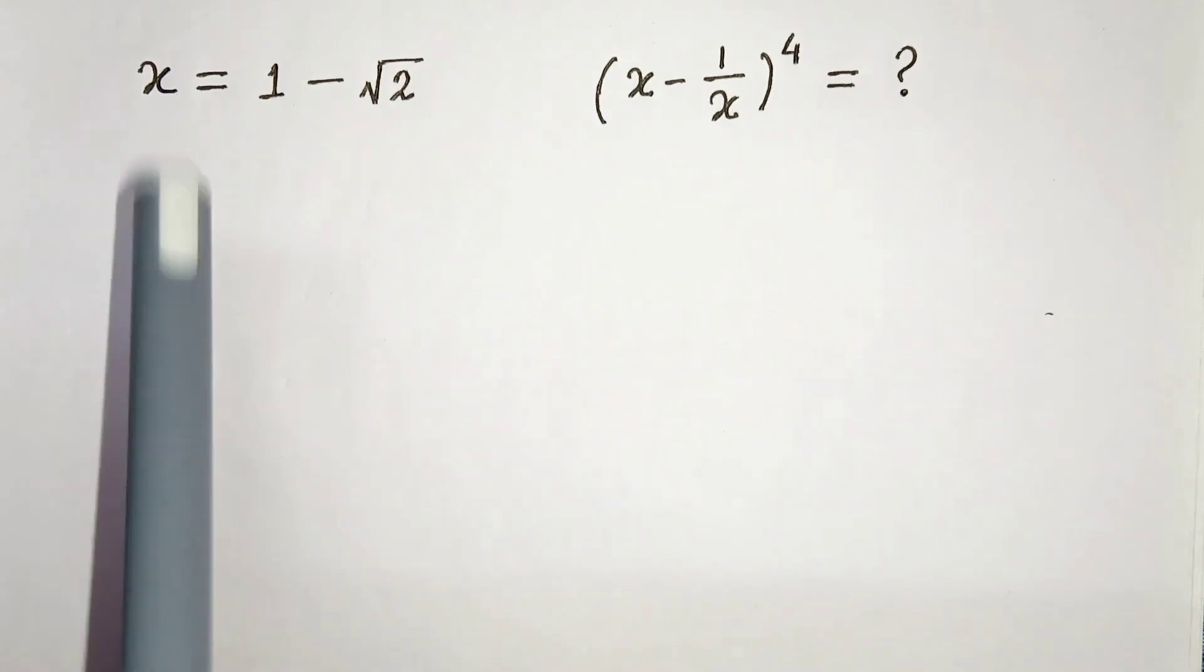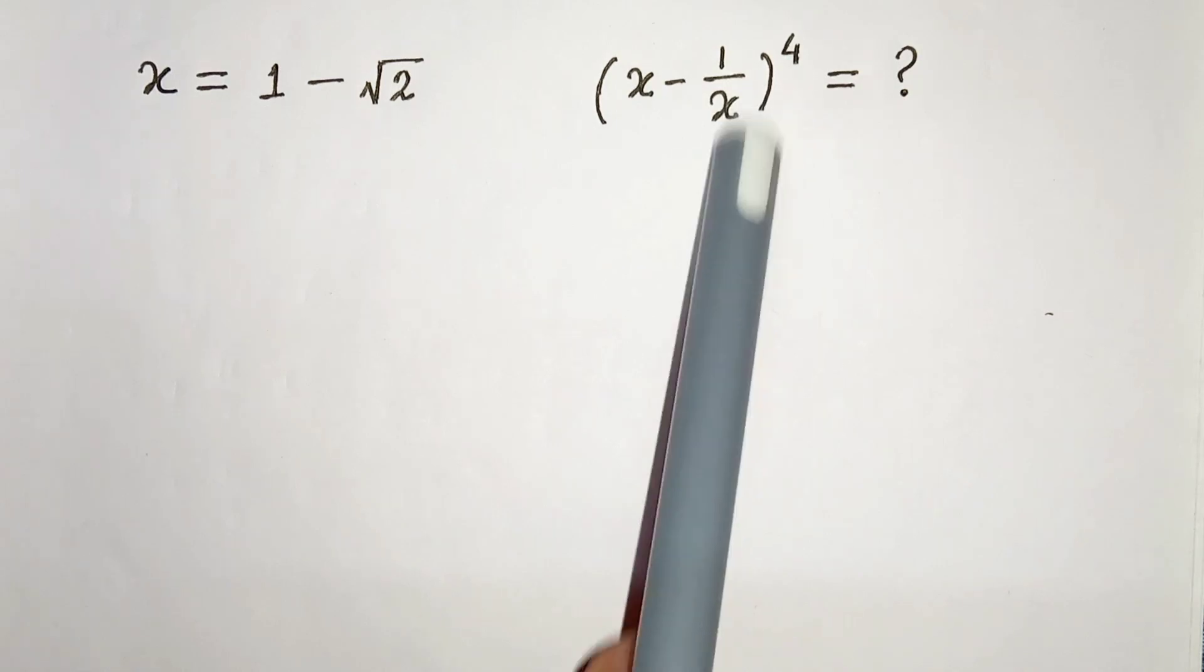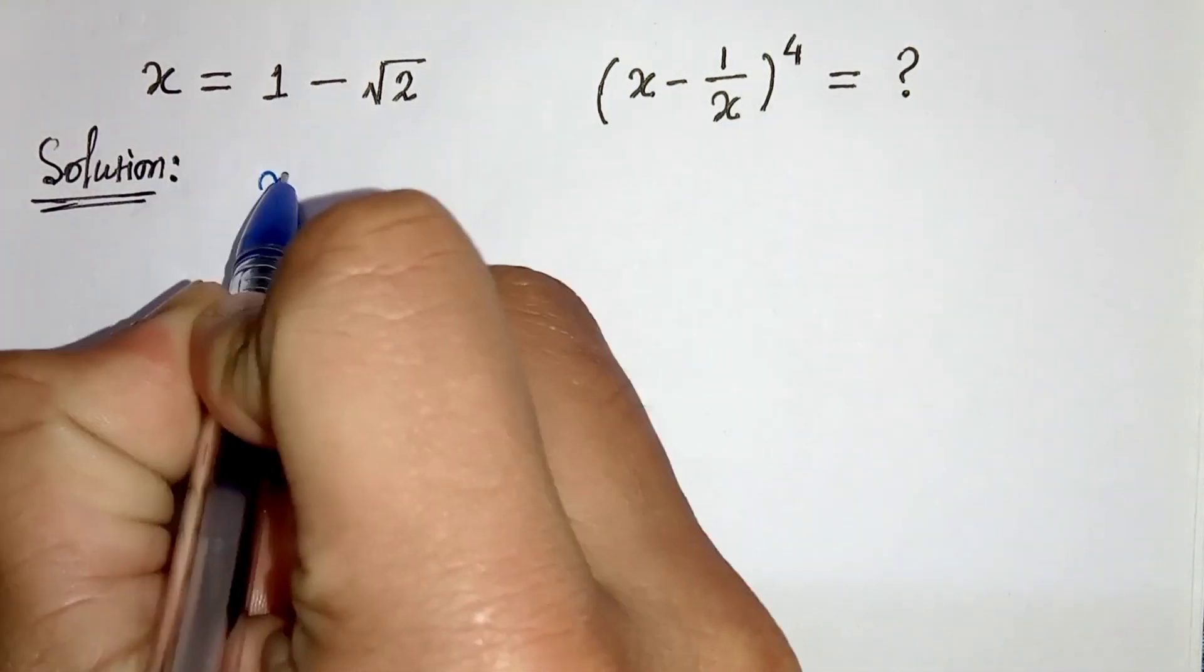Hello everyone, in this video we have x equals to 1 minus root 2. We have to find x minus 1 by x whole to the power 4 equals to what. So let's start, so we have x equals to 1 minus root 2.